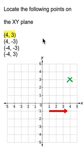To locate the coordinate (4, 3) on an XY plane, we move to the right of the origin by 4 and up by 3.